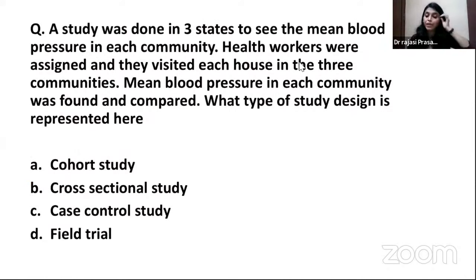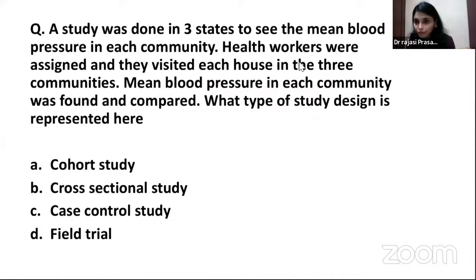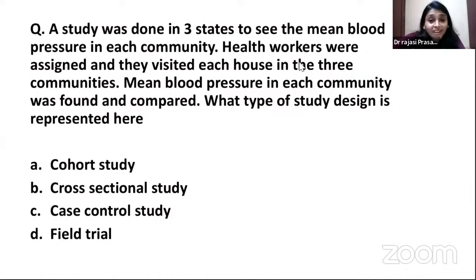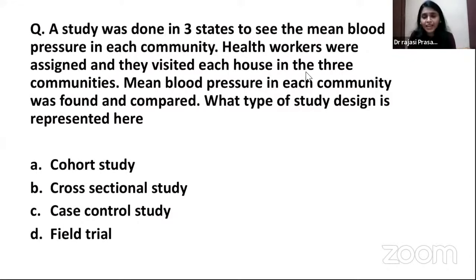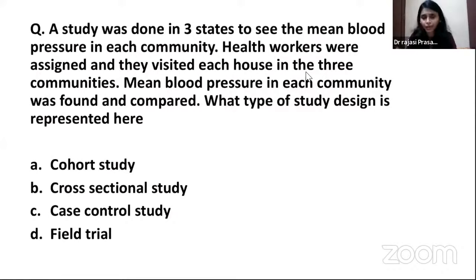Next question: a study was done in three states to find the mean blood pressure in each community. Health workers visited each house and the mean blood pressure was found and compared. This is a cross-sectional study — it's a survey. There's no intervention here; they're simply going to communities to find out the mean blood pressure.